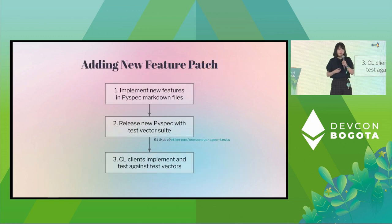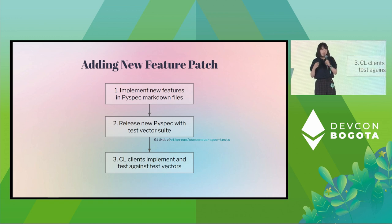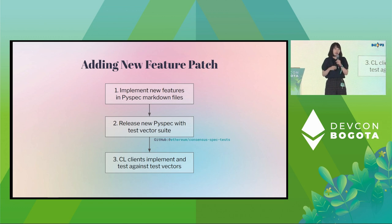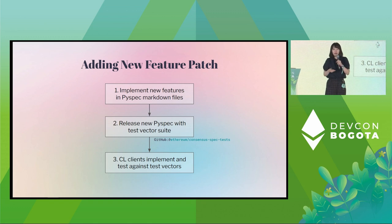If there are new features we are thinking about applying on the consensus side, like the beacon chain side, you might try to prototype it with the markdown files I'll introduce later. We implement it in markdown files and run the tests. The test vectors are generated with Python test cases using PyTest. Client teams can then download those test vectors to test their implementations.